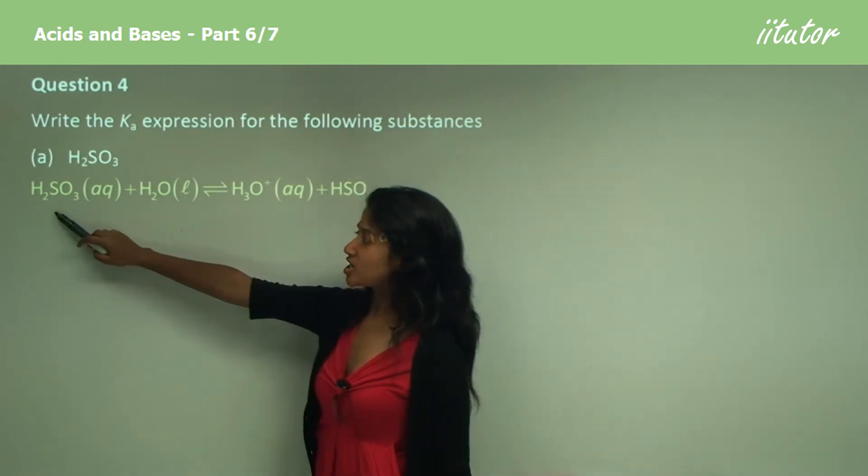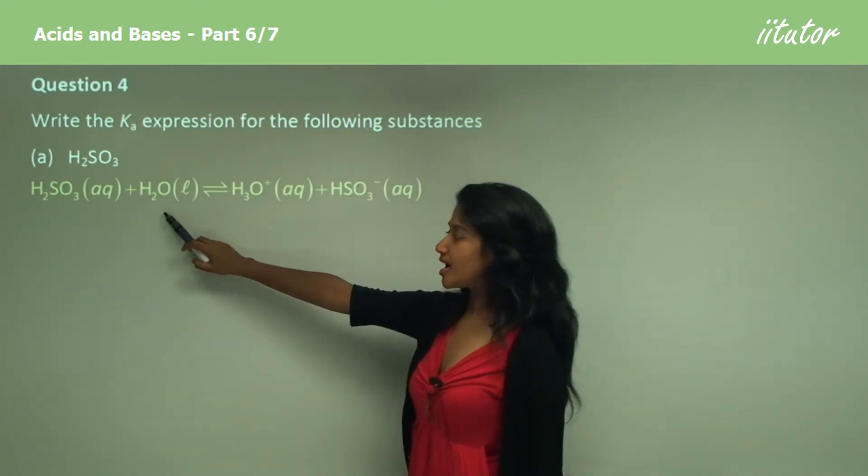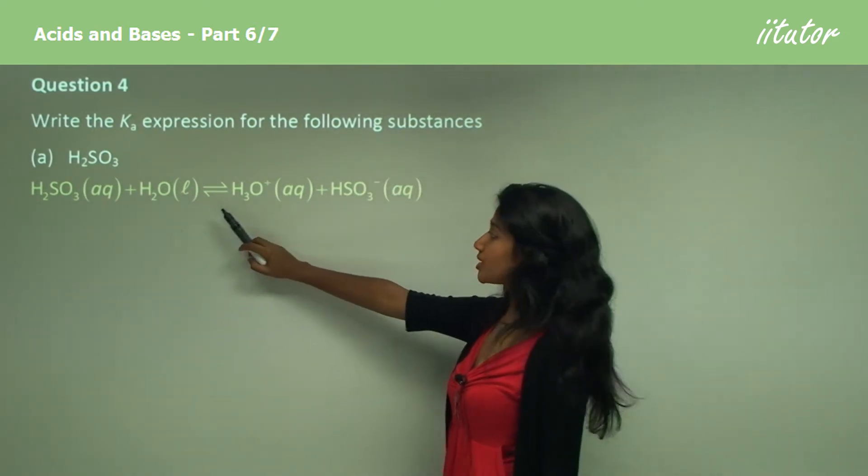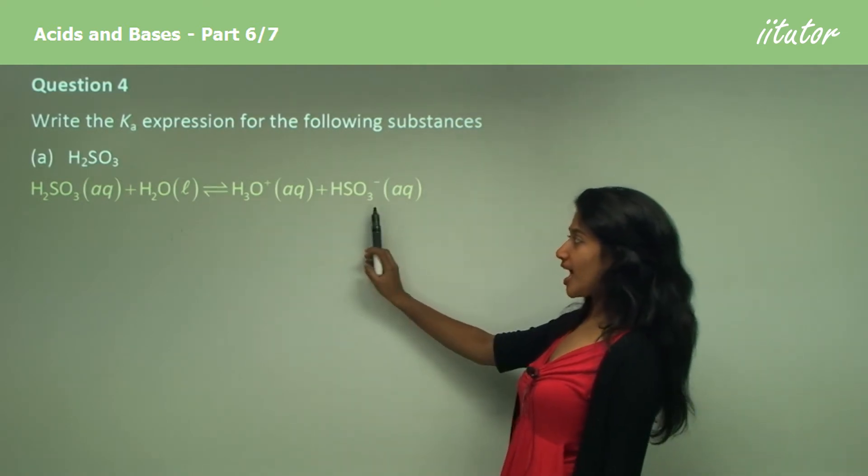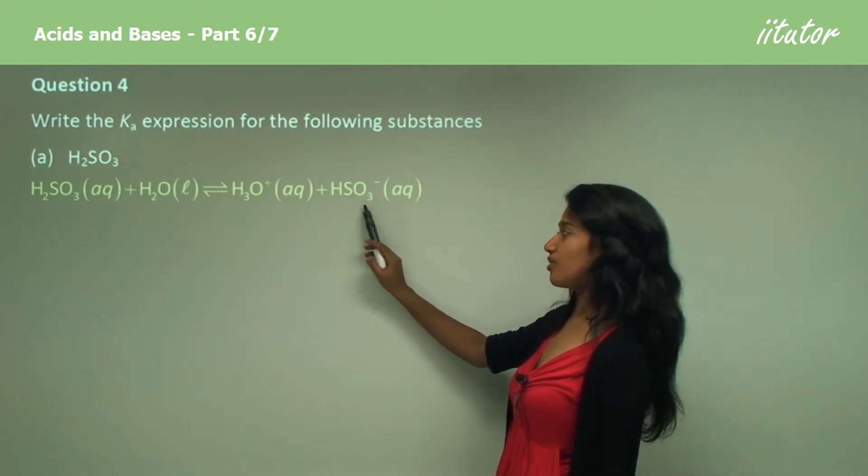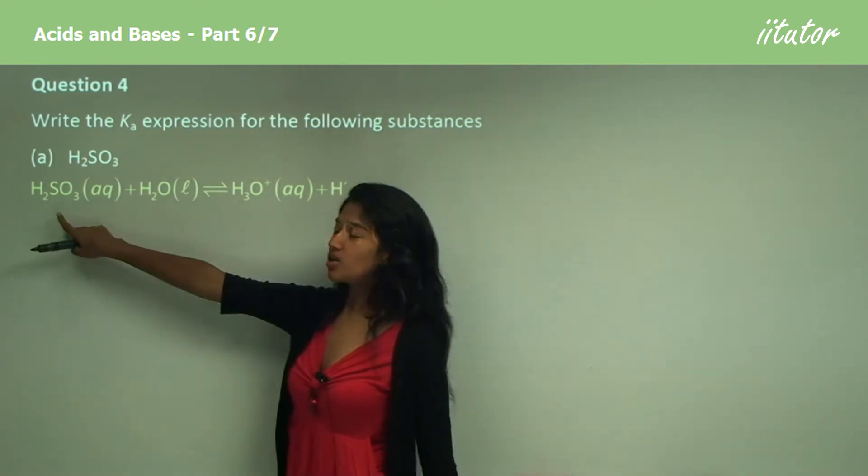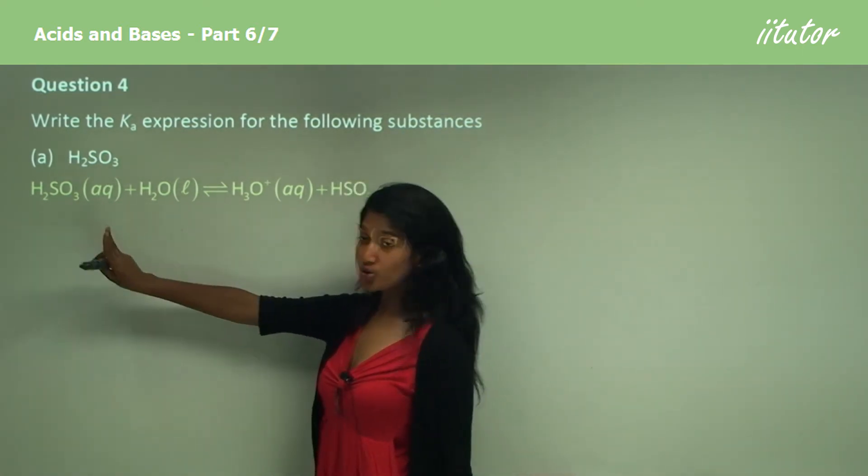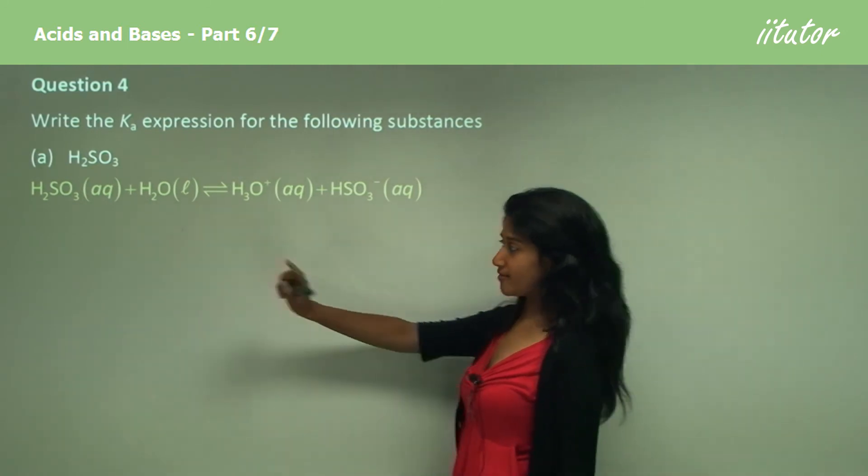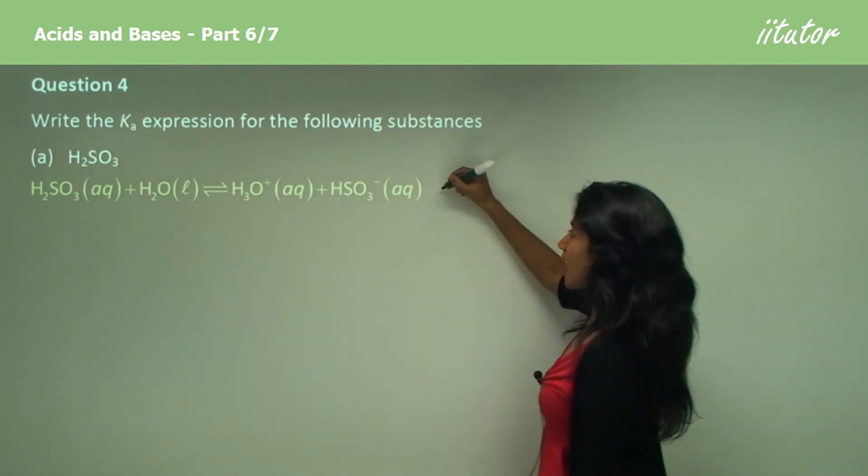As you can see, here we have H2SO3 ionizing with water to form a hydronium ion and the HSO3- ion. But it is important to know that it has only lost one hydrogen, not two, even though it does have two.